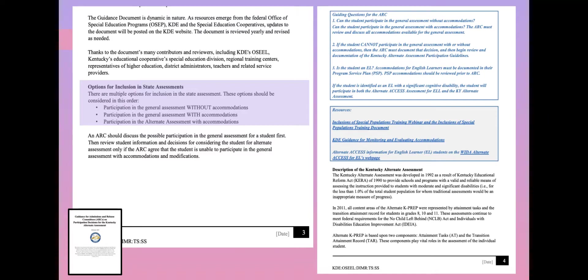Starting on page 3, I encourage you to highlight the section that talks about options for inclusion in state assessment. There are multiple options for inclusion in our state assessments, and we must consider them in order. We'll document in the conference summary notes that we've had this discussion. We start by asking if this student could participate in the general assessment without any accommodations — yes or no, with data. Then we look at whether they could participate in the general assessment with accommodations. If the answer to that is no, then you are going to consider participation in the alternate assessment with accommodations — a really important section to make sure you're documenting step by step.